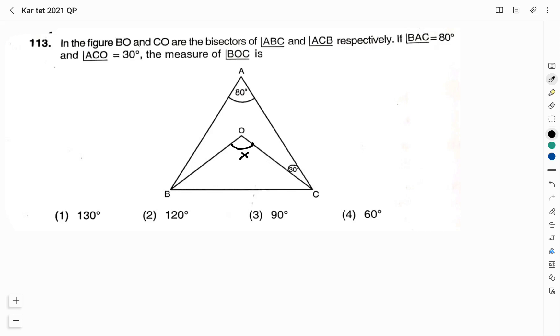They have given that BO and CO are the bisectors of angle ABC and ACB. Bisector means it divides the angle equally. Since they have given angle ACO as 30 degree, CO is the bisector. Therefore, angle OCB is also 30 degree. In order to find OBC, we will find what is angle B. We will consider triangle ABC.